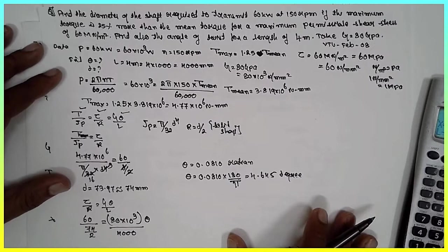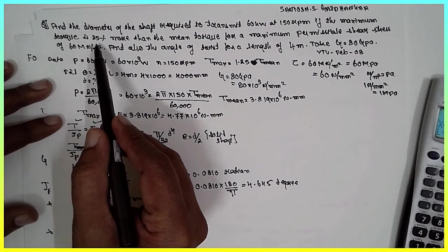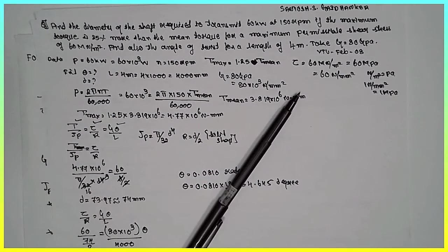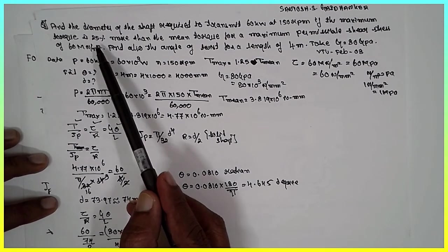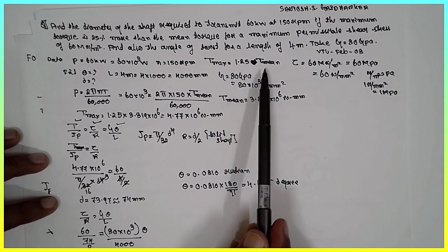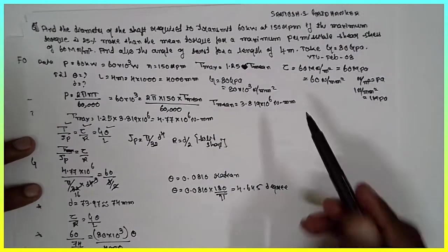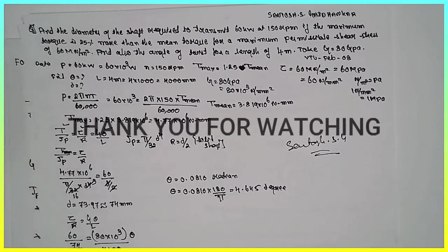This completes the problem. The one thing you have to remember is this part: the maximum torque is 25%, that means you have to add with the 100 and divide by 100. You will get in terms of 1.25 T max. I am Santosh Gadhanko. Thank you very much.